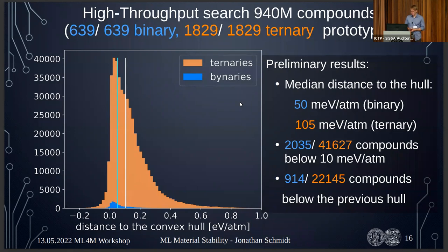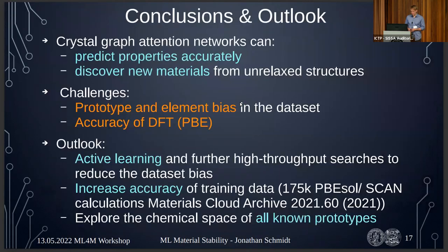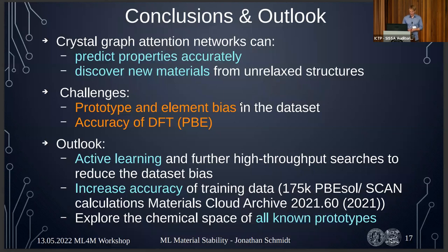To summarize: crystal graph attention networks can predict properties accurately from unrelaxed structures and discover new materials. The main challenges are related to data. The element bias — particularly for lanthanides and actinides — is being corrected through more high-throughput searches. For prototype bias, we want to do active learning; so far we haven't been fully successful, but we've learned a lot at this conference and talked to people doing active learning, so we hope to be more successful.